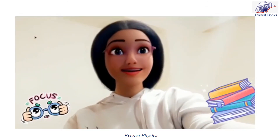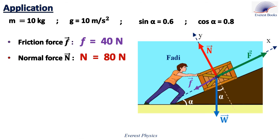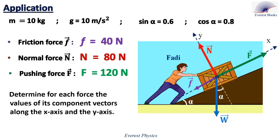Focus please, this is important. Let's solve an application about the x and the y components of a force. A person is pushing a box up an incline by applying a force F directed parallel to the incline upwards. During its motion up the incline, the box of mass 10 kilograms is under the action of its weight W, a friction force of magnitude 40 newtons, a normal force N of magnitude 80 newtons, and the applied force F of magnitude 120 newtons. Determine for each force the values of its component vectors along the x-axis and the y-axis.